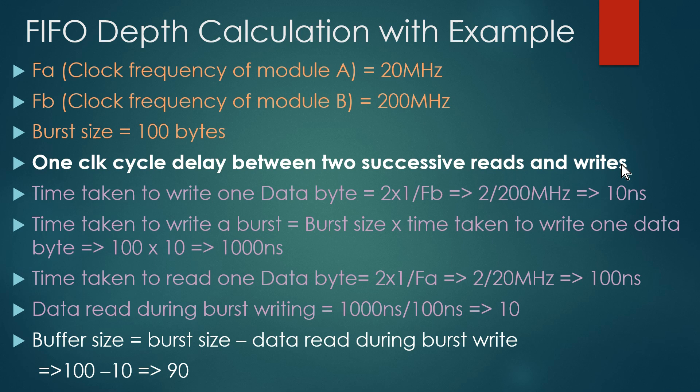Now let us calculate the FIFO depth. In the first step, we calculate the time taken to write one data byte. Module B takes two clock cycles to write one data byte because one cycle is idle. The time period of one clock cycle is 1/FB, so the total time for two clock cycles is 2 × (1/FB) = 2/200 MHz = 10 nanoseconds. So the time taken to write one data byte is 10 nanoseconds.